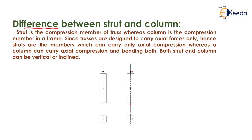Now the difference between column and strut. Many students think that a strut is an inclined member in a truss and a column is a vertical member only. But here we will see the basic difference. A strut is the compression member of a truss — if a compression member is present in a truss it is called a strut — whereas a column is the compression member in a frame. If a compression member is present in a frame then it is known as a column.